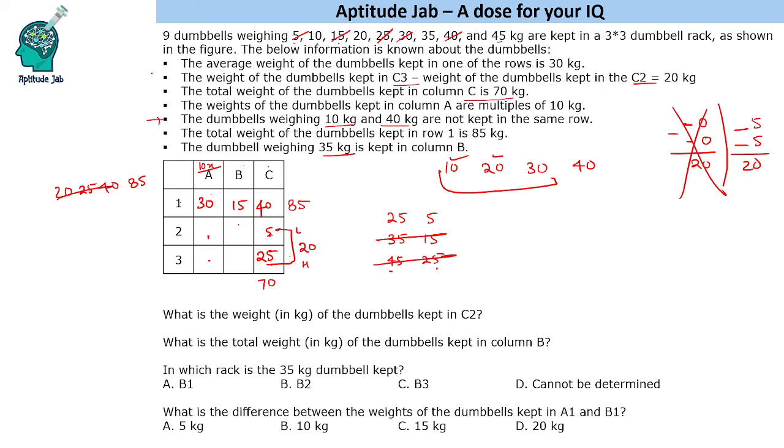Now one of the pieces of information, the first point, it says the average weight of the dumbbells kept in one of the rows is 30 kg. So average is 30. That means total is 90.